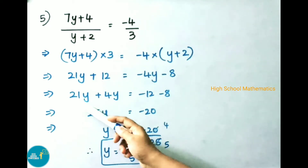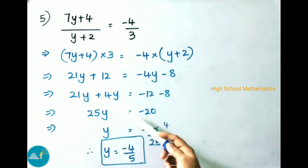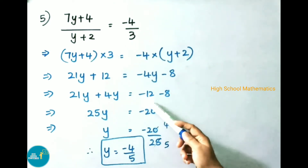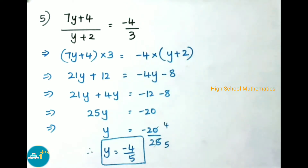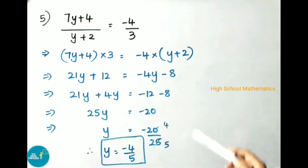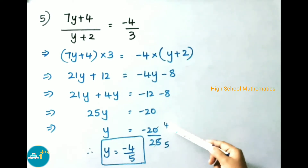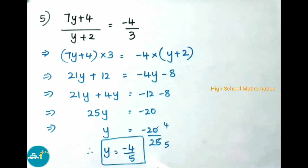That implies 21y + 4y = 25y = -12 - 8 = -20. That implies y = -20/25. Using the 5 times table: 5 × 5 = 25, 5 × 4 = 20. Therefore y = -4/5.